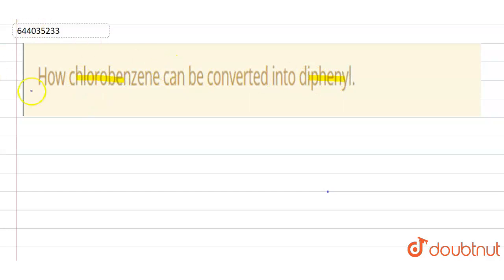So this kind of reaction is known as Wood's reaction. In this reaction, what will happen is we will take two moles of chlorobenzene.